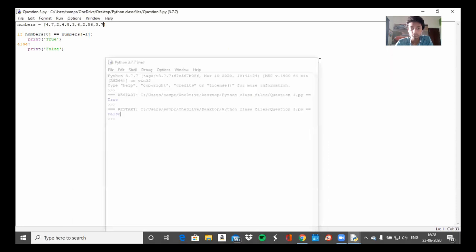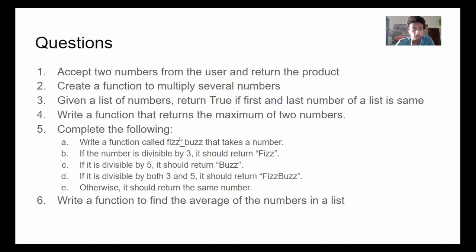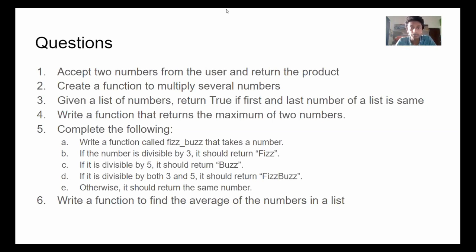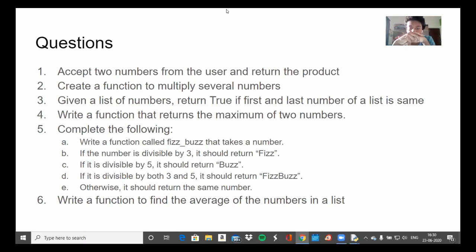Makes sense to everybody? Next question: write a function that returns the maximum of two numbers. This one shouldn't be too difficult. Do you have to take two numbers from the user and tell which one is greater? If you want to do that you can input two numbers, or you can just make two variables. Actually, instead of inputting numbers, what you can do is pass them in as arguments into the function.